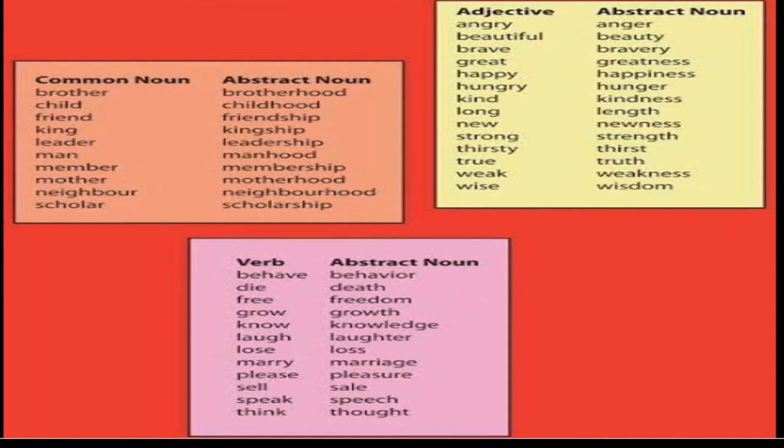If you see this yellow box, there is a list of adjectives and we can form abstract nouns from these adjectives. For example, angry, anger, beautiful, beauty, brave, bravery, great, greatness, happy, happiness and there are many other adjectives which can be changed into abstract nouns.